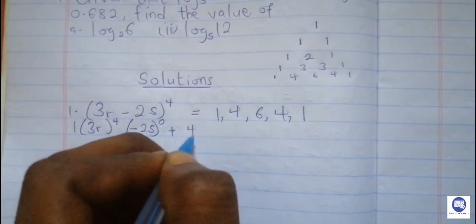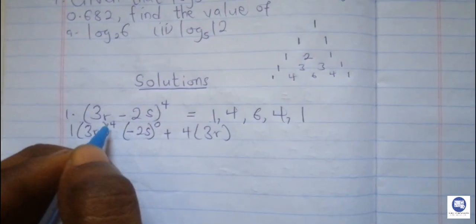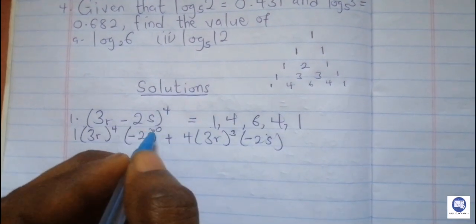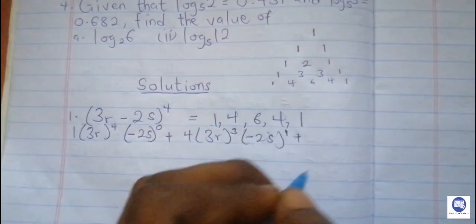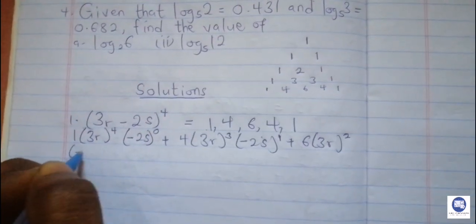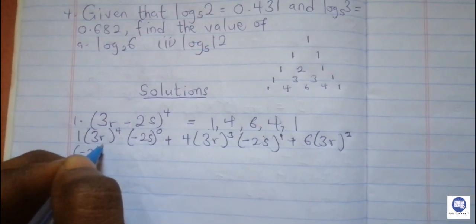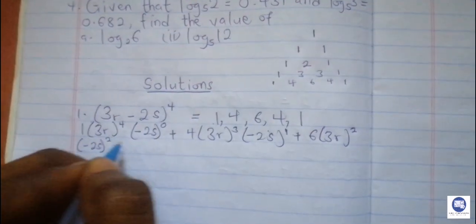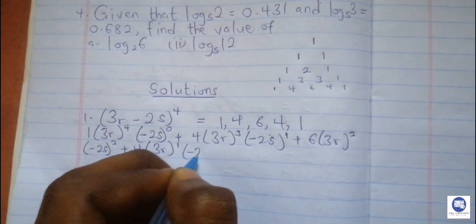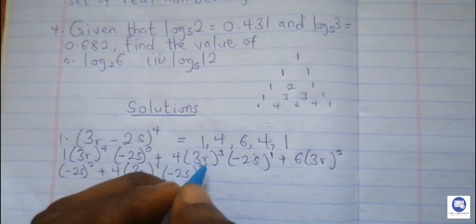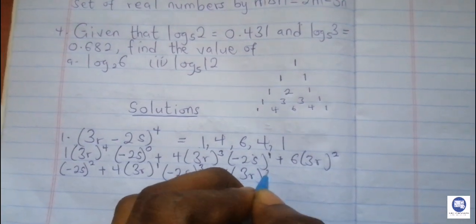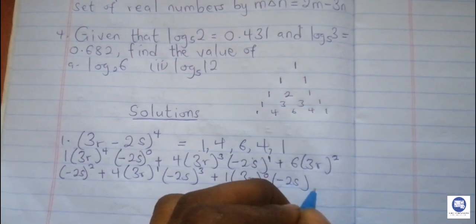So we have 4 times (3r)³ times (negative 2s)¹. Then plus 6 times (3r)² times (negative 2s)². The power of the first term decreases while the power of the second term increases. Then plus 4 times (3r)¹ times (negative 2s)³. Then plus 1 times (3r)⁰ times... and the last decreasing power of x will be 0, and the last term is (negative 2s)⁴.